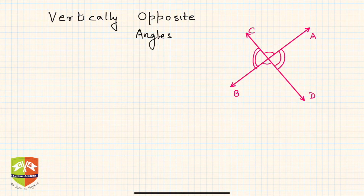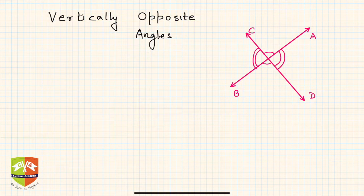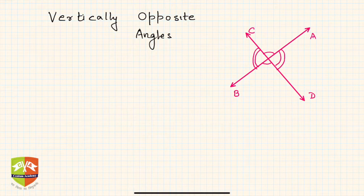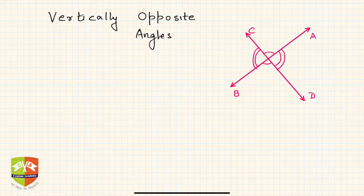Welcome again to another session on lines and angles. We will continue with our concept lectures, and in this lecture we are going to understand a very important component of geometry: vertically opposite angles.